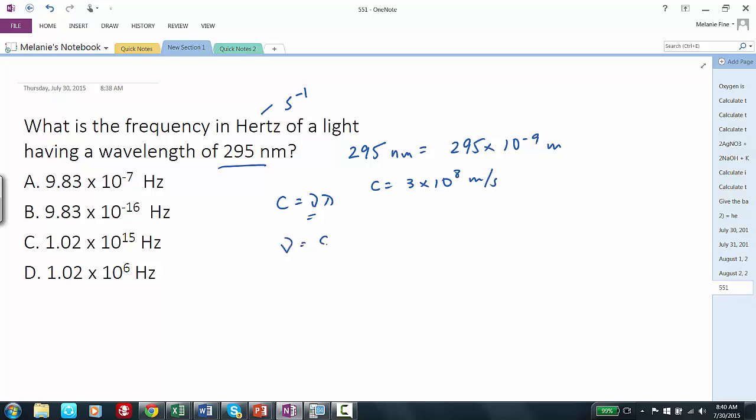So nu equals c over lambda, which is 3 times 10 to the 8th meters per second divided by 295 times 10 to the negative 9 meters. Meters will cancel out, leaving us with per seconds, which is what we want.